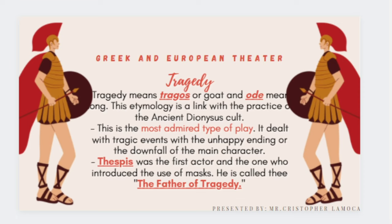Tragedy comes from the Greek word 'tragos,' meaning goat, and 'ode.' Its etymology is linked to the practice of the ancient Dionysus cult. This is the most admired type of play — it dealt with tragic events with an unhappy ending. A well-known example is Romeo and Juliet by William Shakespeare, where both main characters die, resulting in an unhappy ending and the downfall of the main characters.